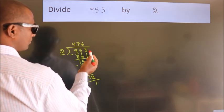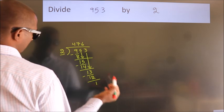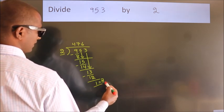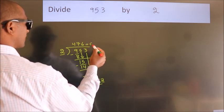After this, no more numbers to bring down. So we stop here. This is our remainder. This is our quotient.